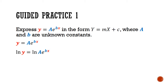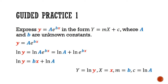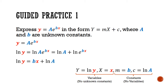Taking natural log on both sides gives us ln y equals ln of a times e to the power of bx. Applying the product rule to split the logs gives ln a plus ln e to the power of bx. The natural log and exponential cancel, giving us ln y equals bx plus ln a. So big Y equals ln y and big X equals x — both independent of the unknown constants a and b. The gradient m equals b and the big Y intercept equals ln a, both independent of the variables x and y.